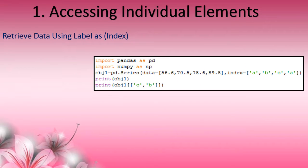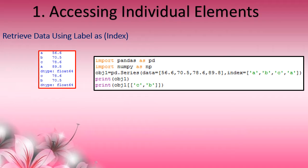In this example, we see how to access more than one index at a time. If you want to access more than one index, the indexes should be enclosed in a double square bracket. We print object1[['C', 'B']], so both indexes C and B are accessed. More than one index means you must enclose the indexes in double square brackets.